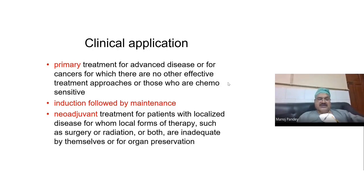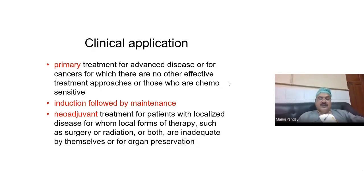Chemotherapy is used as induction followed by maintenance, which is done for most hematological malignancies. You give a higher dose of drugs, and once the cancer comes under control, you put the patient on a maintenance dose. Another use that has become very popular nowadays is called neoadjuvant, where chemotherapy is given before any form of local therapy like surgery or radiation.